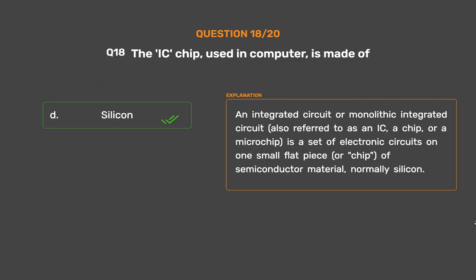An integrated circuit, or monolithic integrated circuit, also referred to as an IC, a chip, or a microchip, is a set of electronic circuits on one small flat piece, or chip, of semiconductor material — normally silicon.